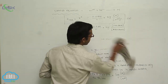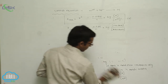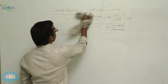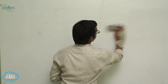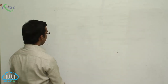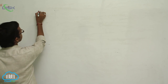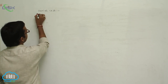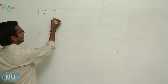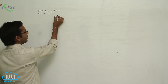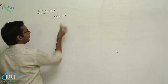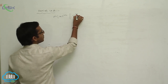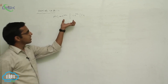The Nernst equation is applicable for the calculation of reduction potential, for example in the Daniel cell reaction: Zn | Zn²⁺ || Cu²⁺ | Cu. This cell reaction demonstrates the application of the Nernst equation for calculating electrode potential under non-standard conditions.